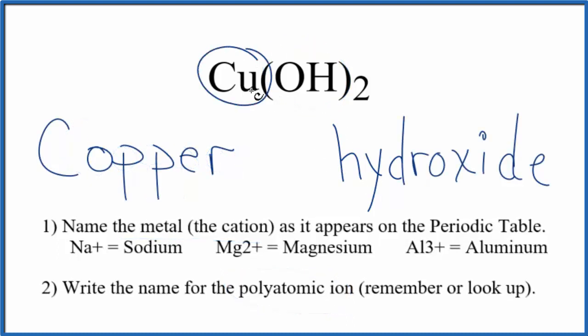But Cu, copper, that's a transition metal, so it can have a different ionic charge depending what it's bonded to. Here, it's bonded to two of these hydroxide ions, and each hydroxide ion has an ionic charge of 1 minus. So we have 2 times 1 minus equals 2 minus, the copper has to be 2 plus.